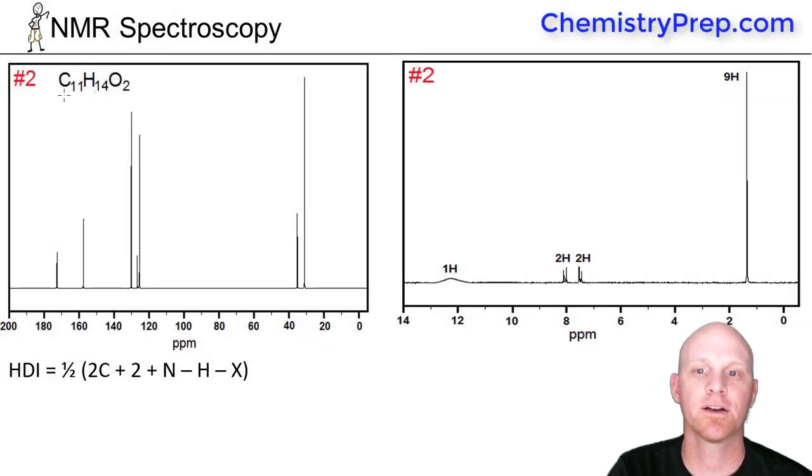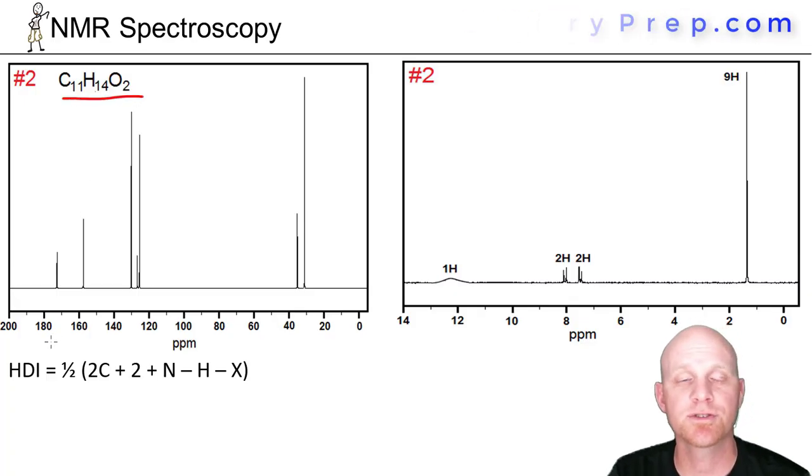So this is the second compound we're going to take a look at here, and the formula given for you is C₁₁H₁₄O₂. So since we have a formula, the first thing we should do before even looking at the spectra here is calculate the degrees of unsaturation.